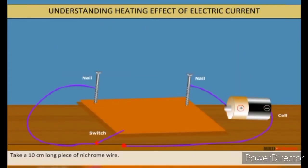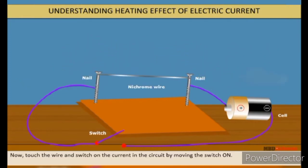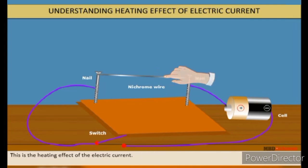Take a 10 centimeter long piece of nichrome wire. Tie it between the nails. Now, touch the wire and switch on the current in the circuit by moving the switch to on position. Touch the wire again. Do not hold the wire for a long time and switch off the current. Touch the wire again after a few minutes. We will observe that the wire becomes hot when an electric current passes through it. This is the heating effect of the electric current.